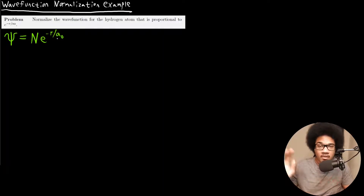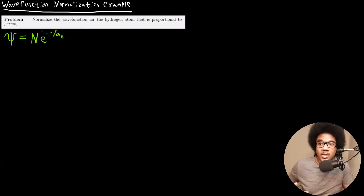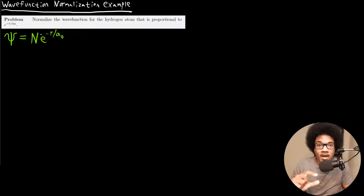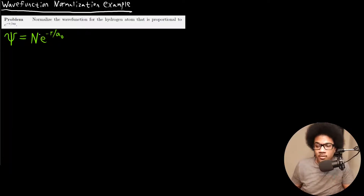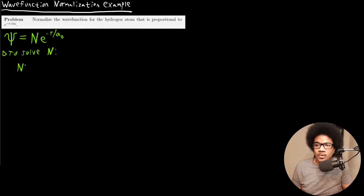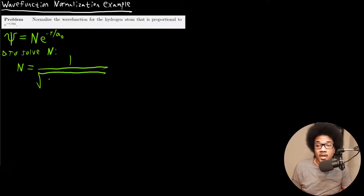We already know that e to the negative r over a-naught gives us a valid solution to Schrödinger's equation, but we need to figure out what normalization factor will give us a normalized probability distribution so that we can view this wave function within the Born interpretation. Recall from the last video that to solve for N, the normalization factor, N is equal to 1 over the square root of the integral of the probability distribution over all space.